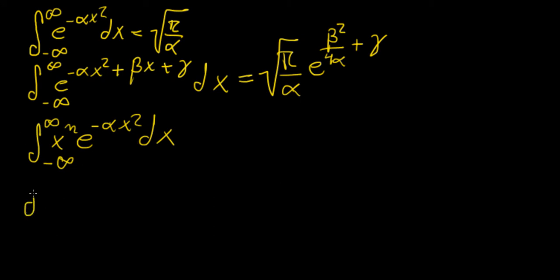So what we're going to do is we're going to start with the first one, e to the minus alpha x squared dx, and we already know the result. We know that this is pi on alpha. And what we're going to do is we're going to differentiate this expression, but remember,